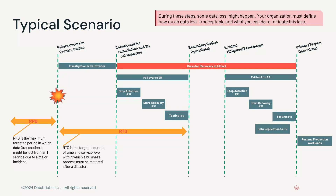A failure occurs in the primary region and we start investigating internally. We may reach out to a SaaS vendor or cloud services provider for joint investigation. Ultimately, we have to decide: can we wait for remediation based on our RTO, and is the secondary region impacted? There are three high-level activities in the failover. First, we want to stop everything we can in the primary region — not always possible during an outage — to gracefully shut down and reduce duplicate data between regions. Then we start recovery in the secondary region, test it to make sure it's operational, communicate to everyone, and switch workloads to run on the secondary region.